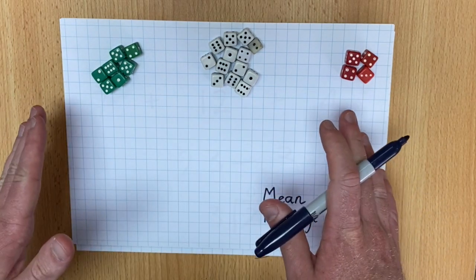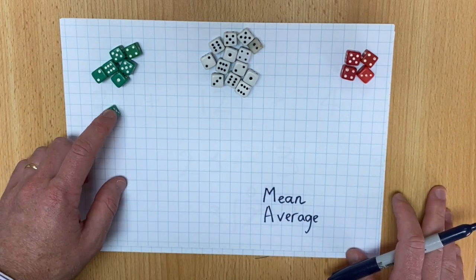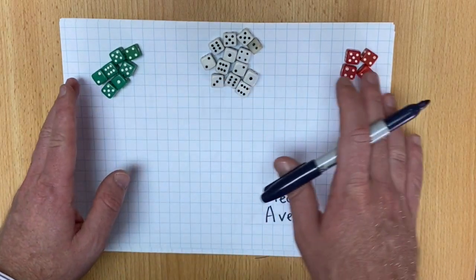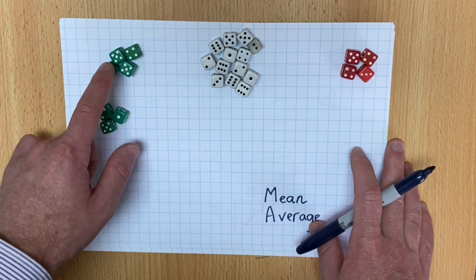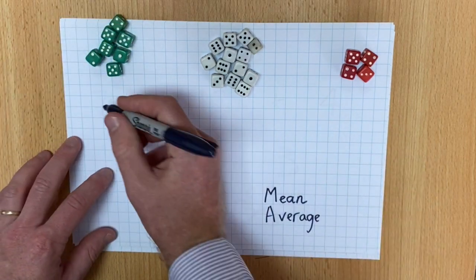you need to add up everything in each group. So we're going to work out the mean amount of dice in these three groups. I'm going to count the green dice. One, two, three, four, five, six, seven. So there are seven green dice.